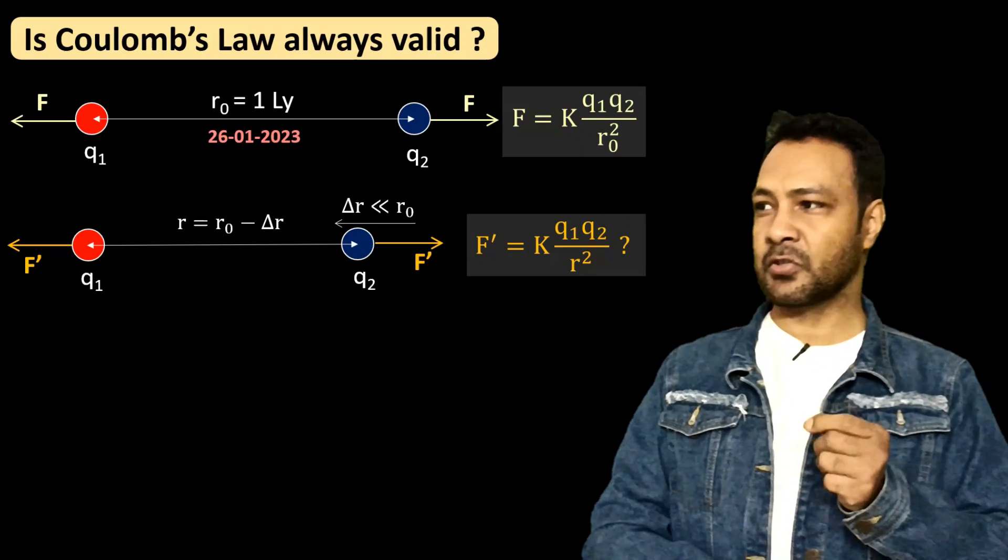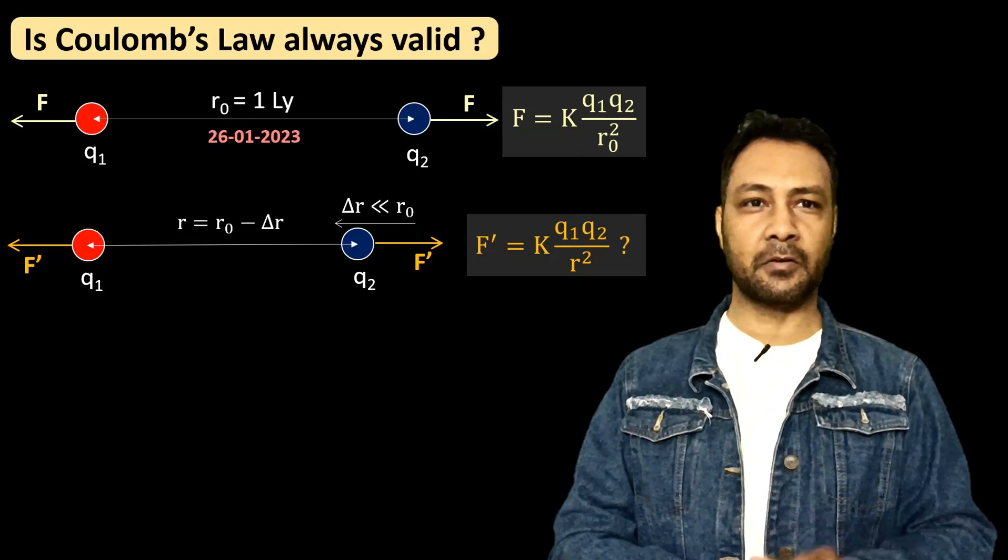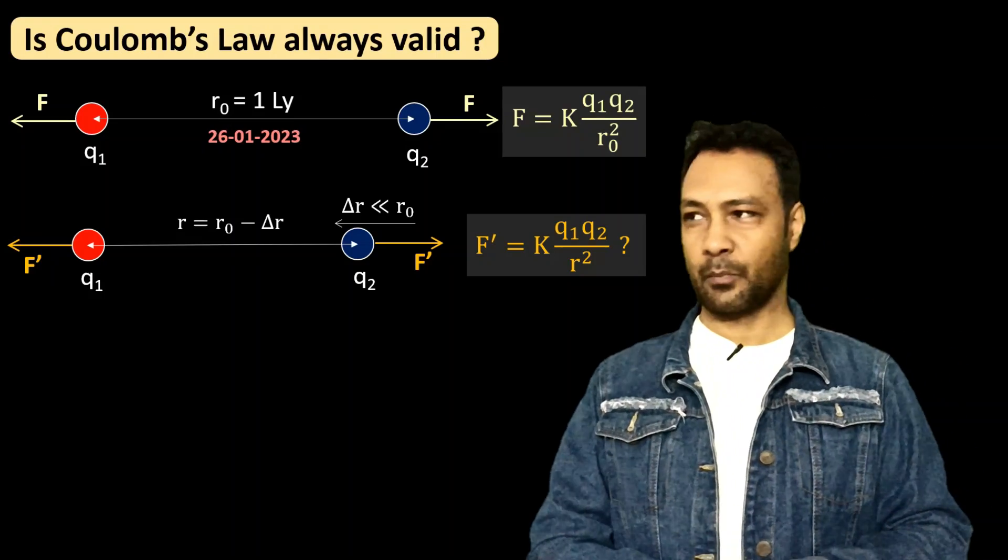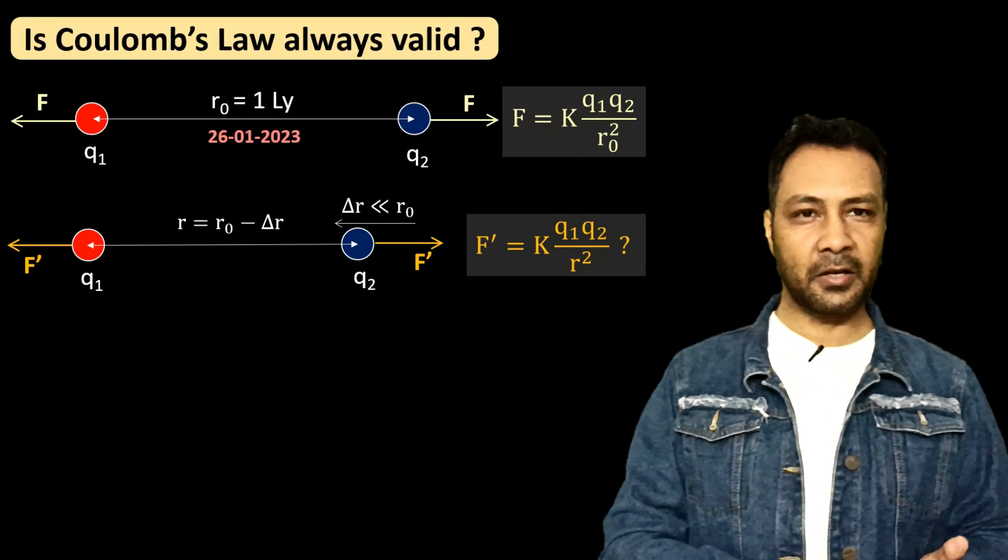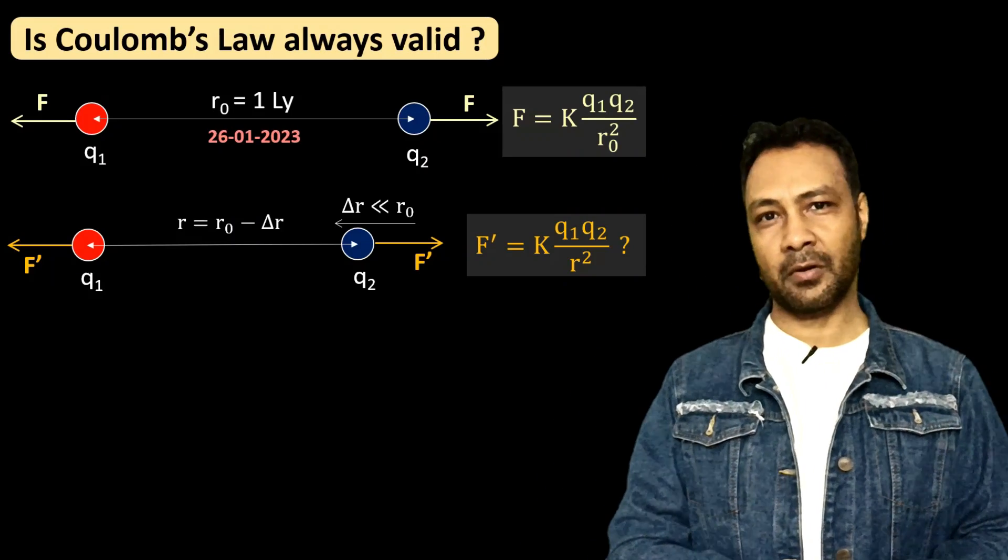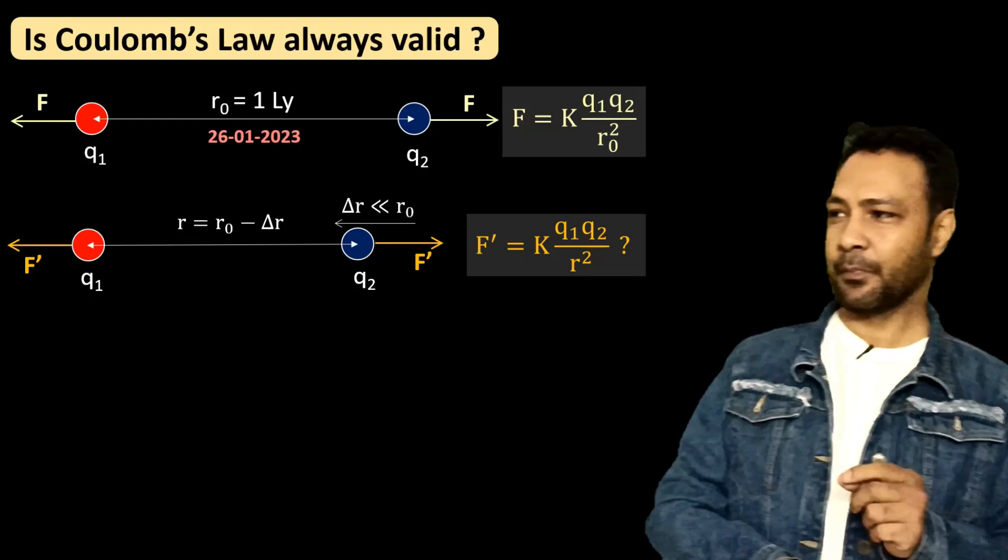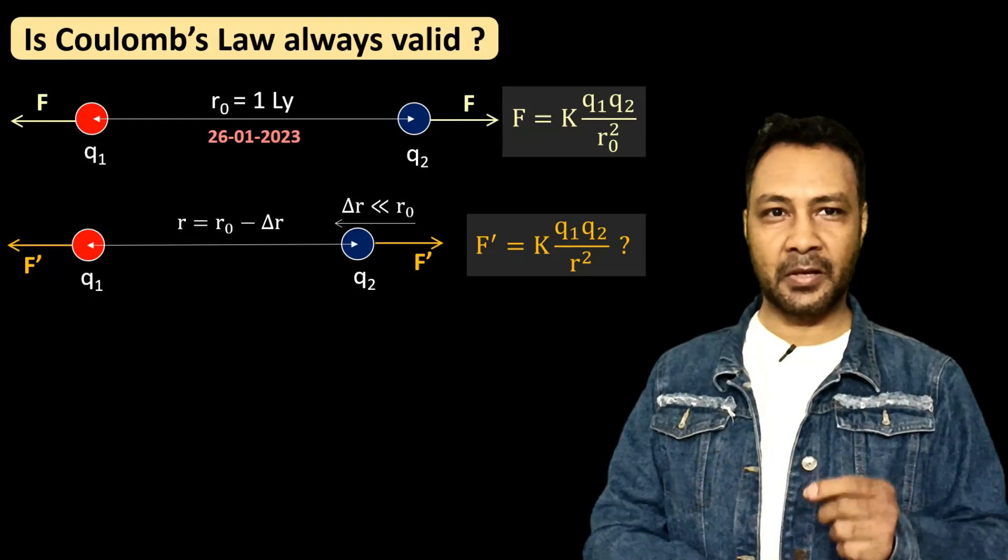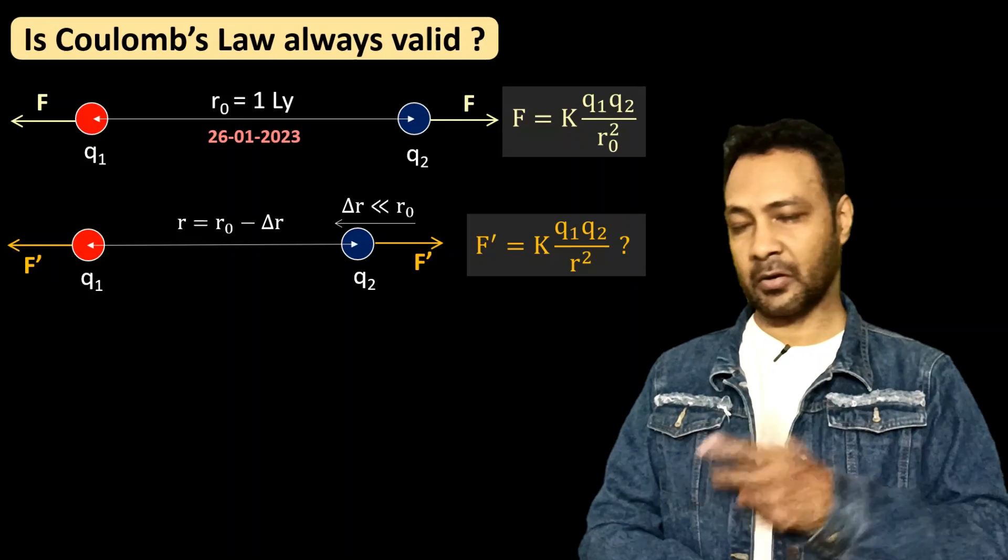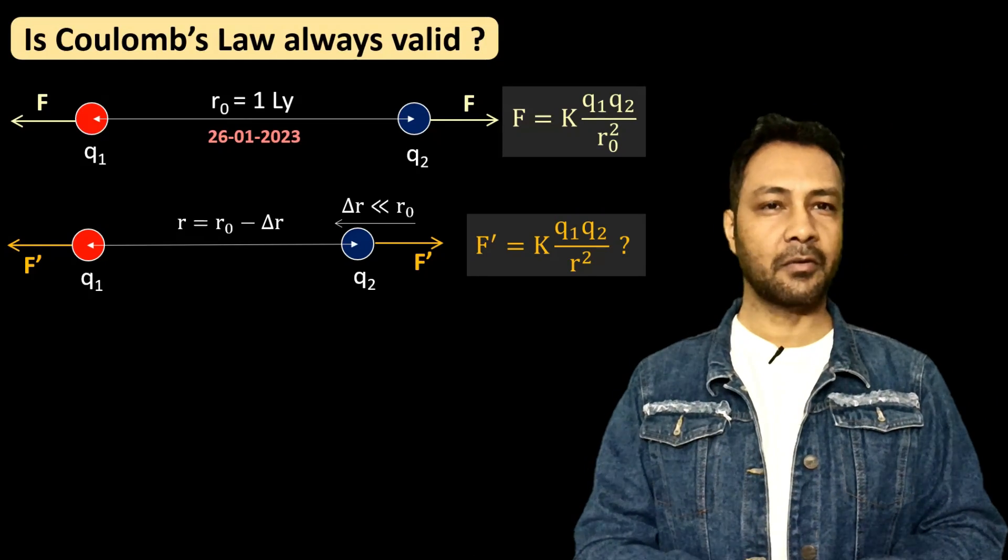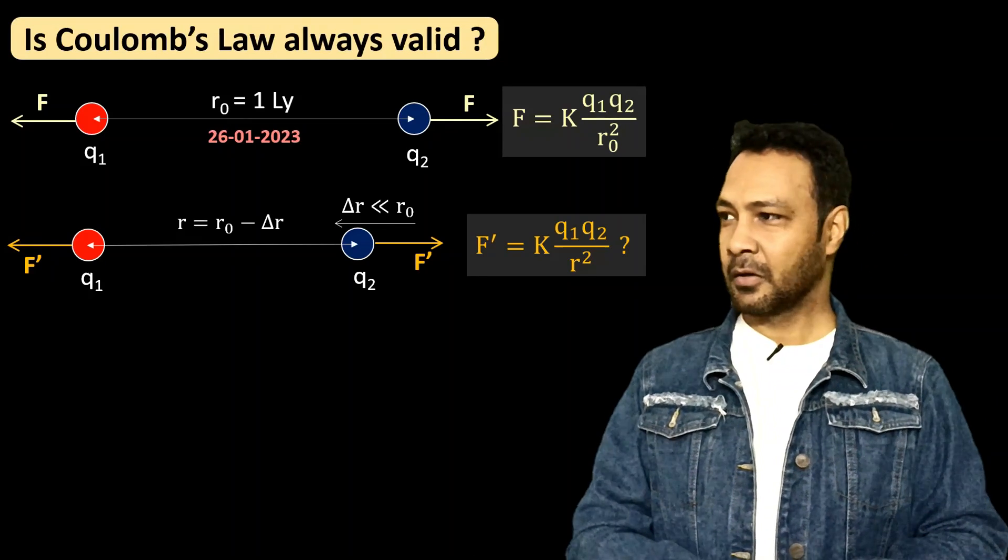So any information that starts traveling from the very moment that q2 is displaced will take one year to reach q1 because the distance was one light year and it takes one year for light to travel to cover distance one light year. So any information that q2 has displaced, whether towards right or towards left or whatever direction, will take one year.